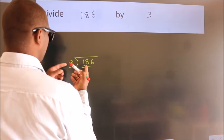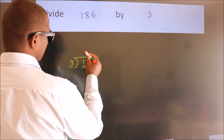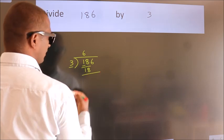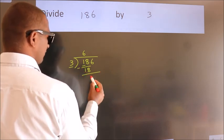When do we get 18? In 3 table. 3, 6, 18. Now we should subtract. We get 0.